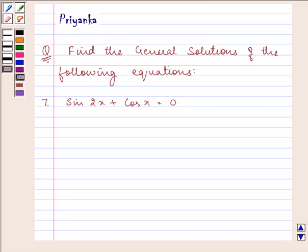Hi and welcome to the session. The question says, find the general solution of the following equations. Now the seventh equation given to us is sin 2x plus cos x is equal to 0.